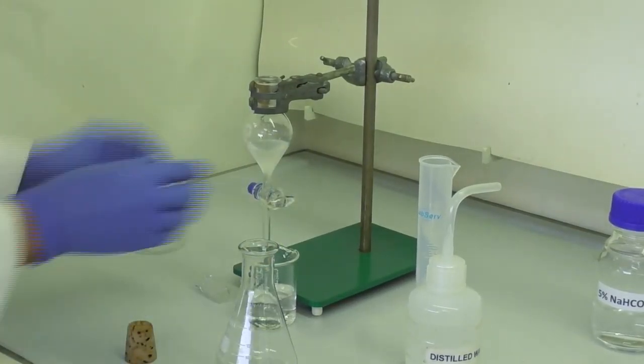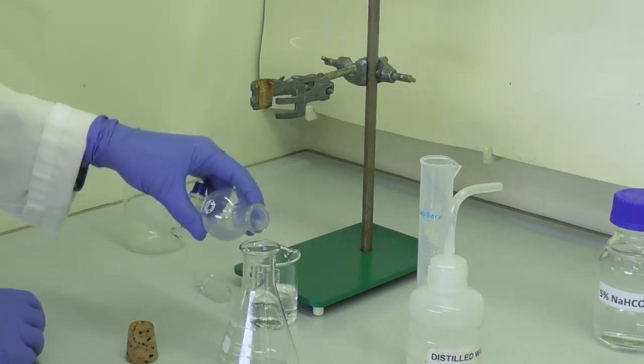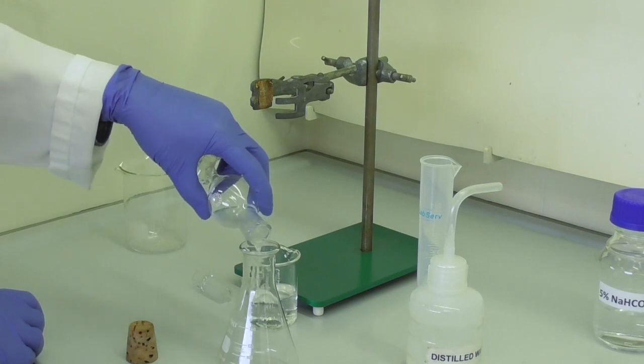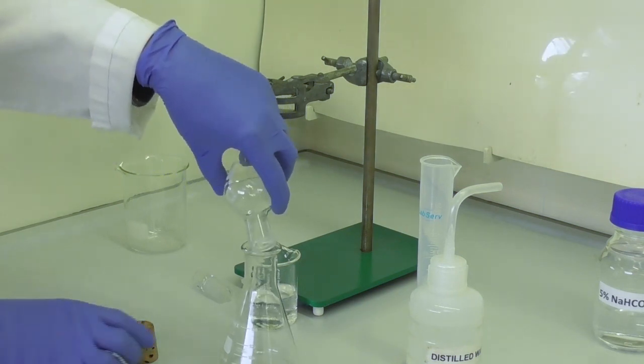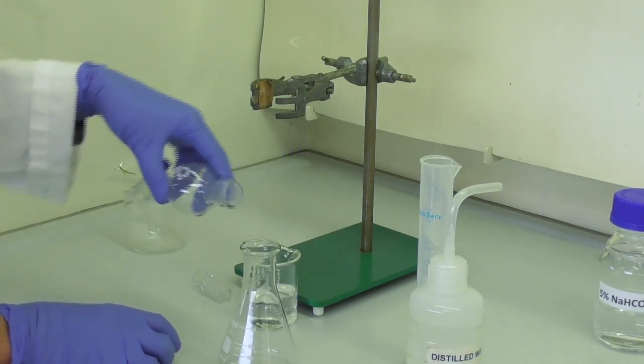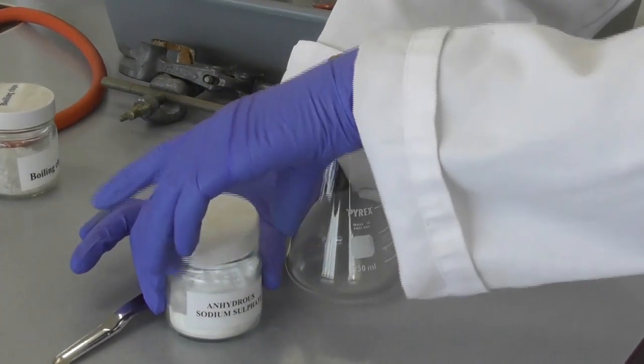We retrieve a dry conical flask from the bench and pour our organic extract into the flask. We do not drain it, we pour it out the top of the separating funnel. Once we've added a bung on top of the flask, we can take it to the bench.